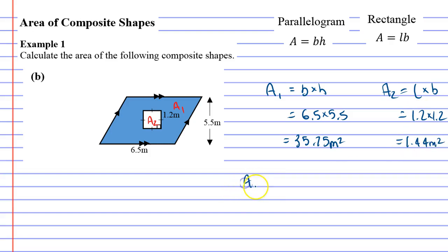Now we're going to find the total area of our composite shape by taking the area of the parallelogram and cutting out or subtracting the area of the square. For this, we get 34.31 metres squared.